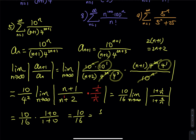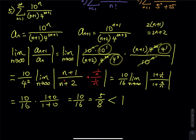So that equals 10 divided by 16 times 1 plus 0 divided by 1 plus 0, which is 10 divided by 16, or simplified, 5 over 8. Since 5/8 is less than 1, according to the ratio test the series is convergent.